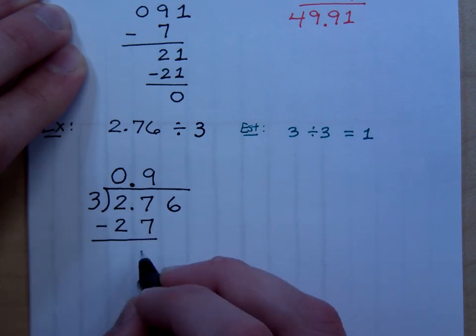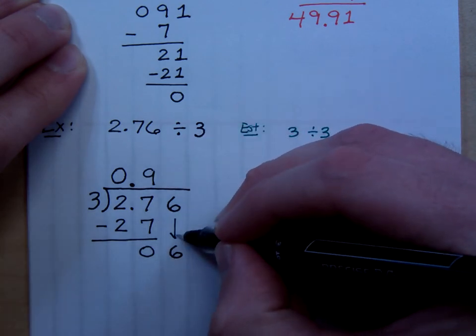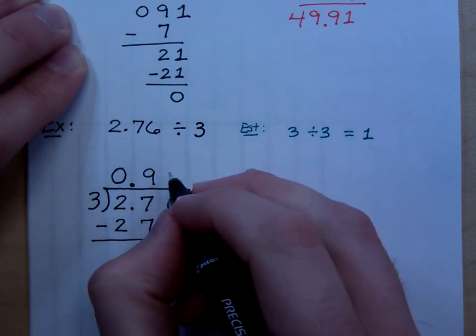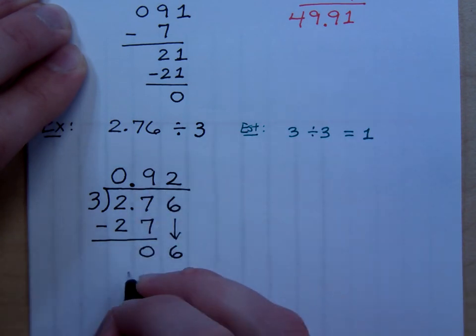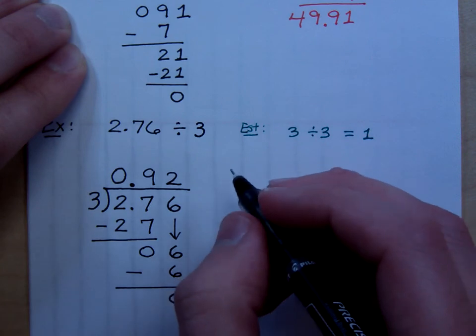So we subtract that, we get 0, bring down the 6. See how we keep everything lined up very nicely. Then 3 goes into 6 how many times? Just twice. So minus 6, I get my remainder of 0. So this is my answer.